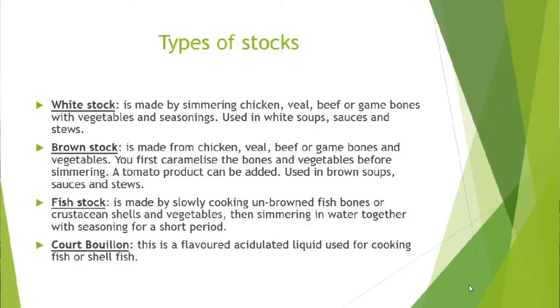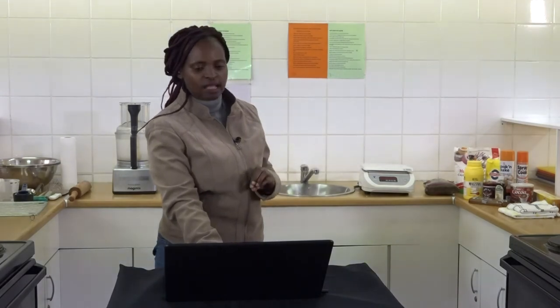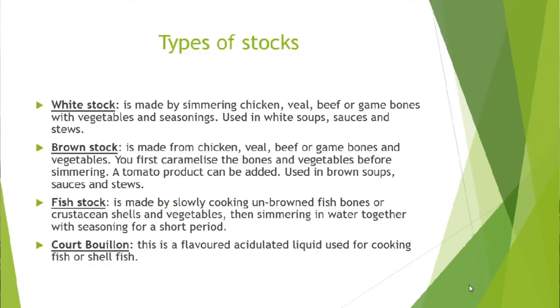The brown stock is made from chicken, veal, beef or game bones and vegetables. When making brown stock, you first caramelize the bones and vegetables: put your bones into a baking tray, sprinkle with olive oil and roast them until the colour changes to brown. Then use those bones for making the brown stock, and also add tomato product such as tomato puree. We use the brown stock when preparing soups, sauces and stews.